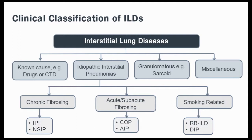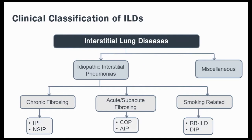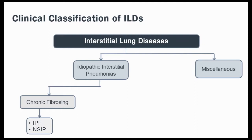Let's walk our way through this table and eliminate some of the possibilities. There are no known culprit drugs and with negative connective tissue serologies, we can rule out the category of known causes. The disease distribution is very atypical for sarcoidosis, as sarcoid is more of an upper lobe predominant disease. The patient is a lifelong non-smoker, thus ruling out smoking-related diseases. The disease presentation is of a chronic, progressive nature, so we can rule out the acute processes. Among the common interstitial lung diseases, we are left with the possibility of idiopathic pulmonary fibrosis and non-specific interstitial pneumonia.